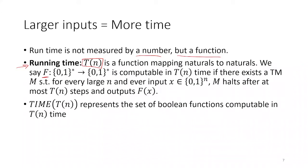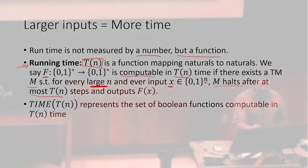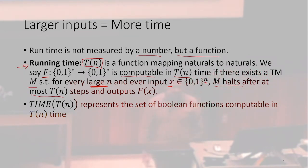To get a formal definition of running time: T(n), a function mapping naturals to naturals, is our running time. This function T(n) takes as input the length of the Turing machine's input and gives as output the number of steps that Turing machine is going to use before it can give the output. If I was trying to compute f, we can say that f is computable in T(n) time so long as there exists a Turing machine such that, for every large enough n — similar to asymptotic notation — if I took an input x of length n, I could guarantee that machine would halt after at most T(n) steps before giving the right answer. So our running time is an upper bound on the number of steps before giving an answer, in terms of n, the input size.